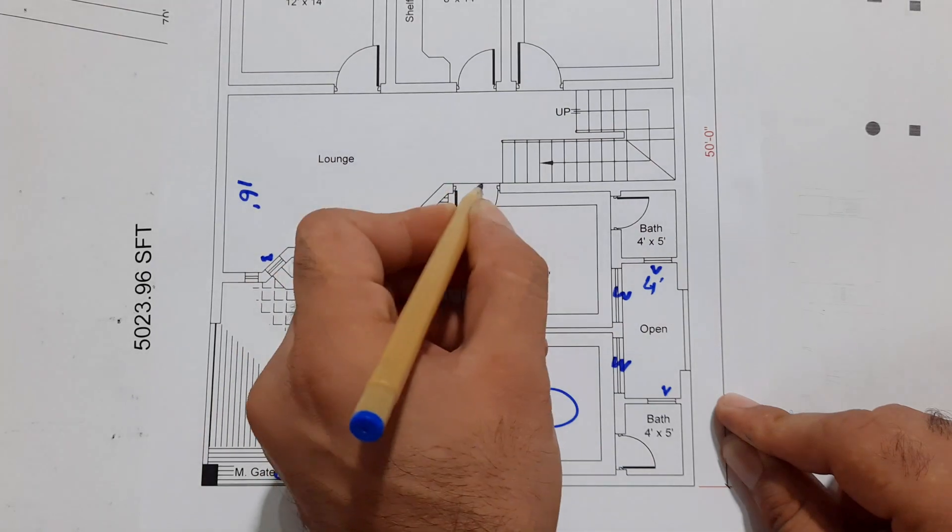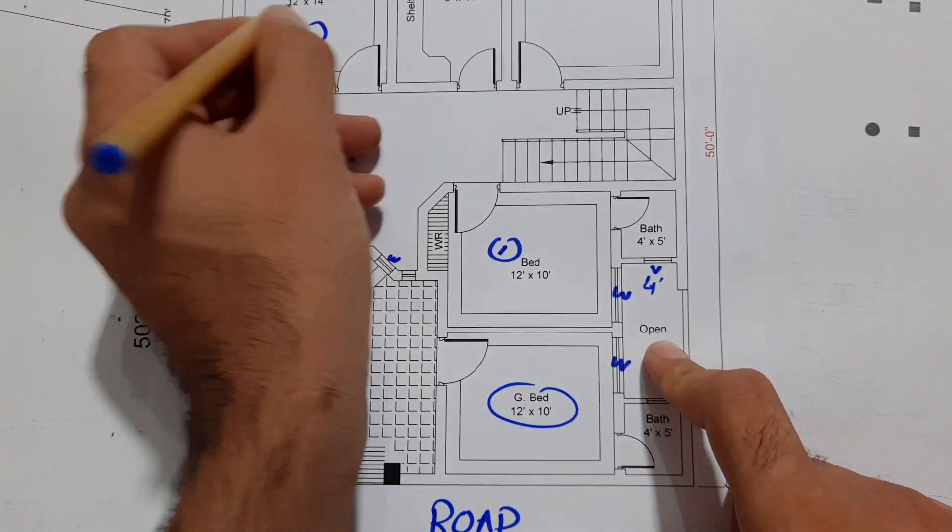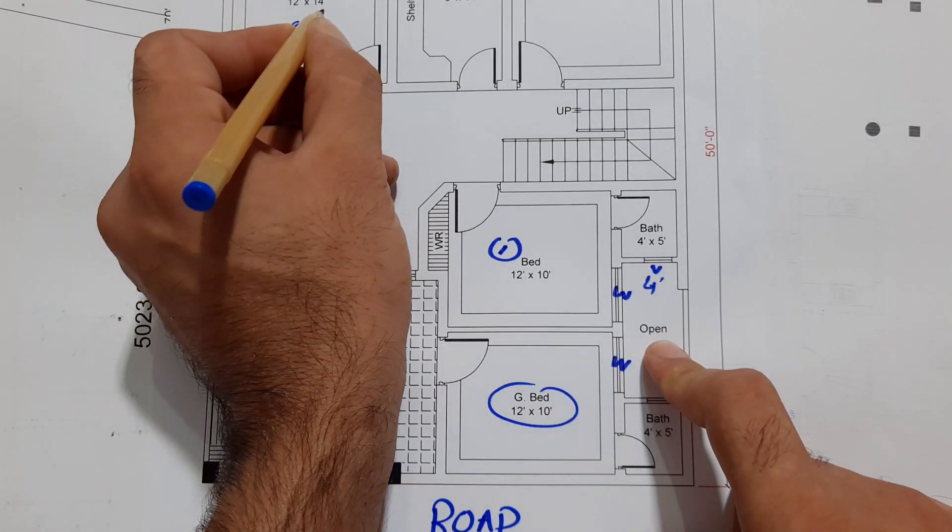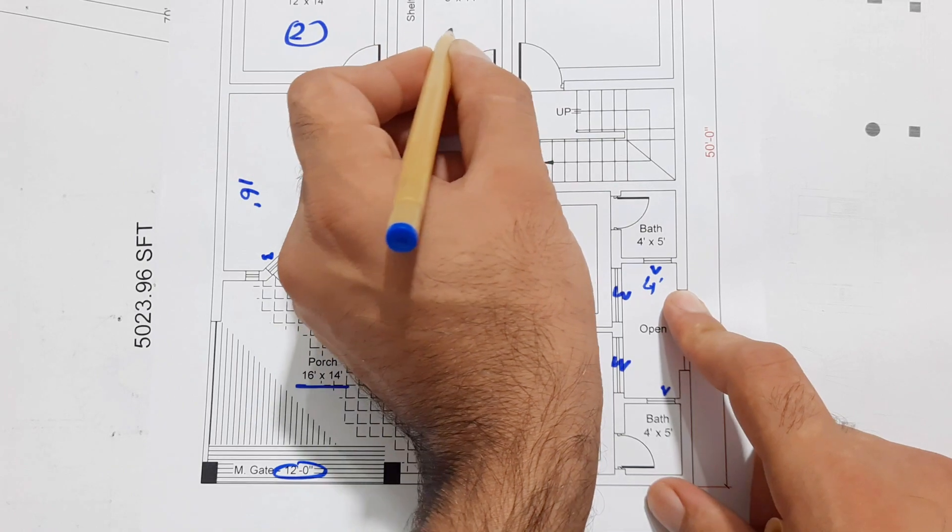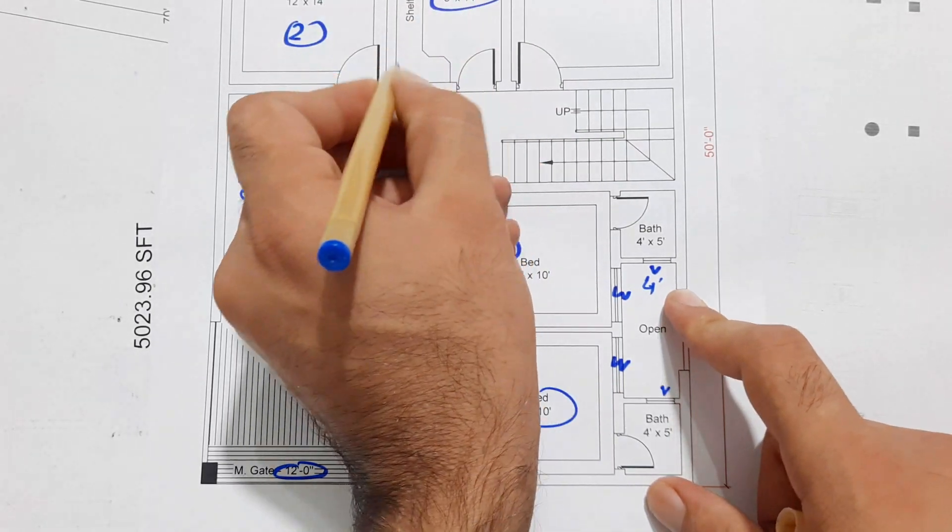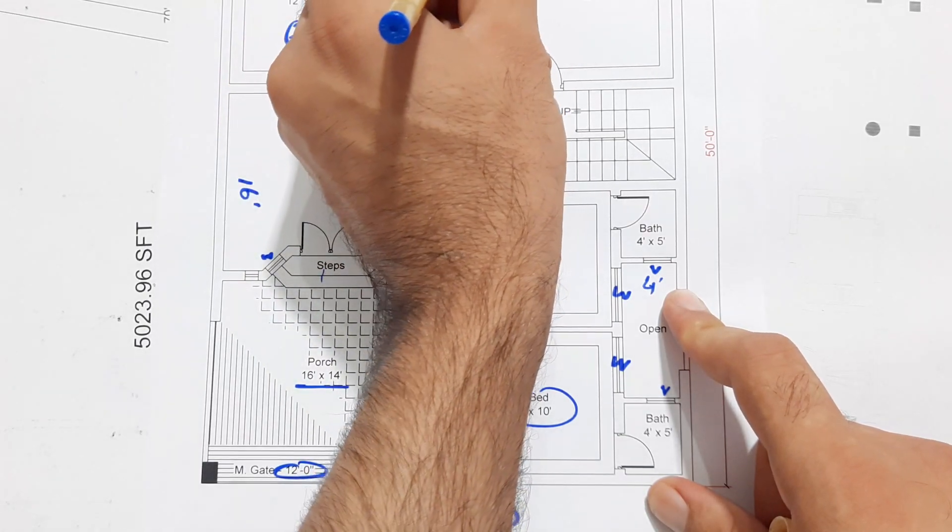Next, you can see we have the second bed which size is 12 by 14 feet. Next you can see this is the kitchen - size of the kitchen is 8 by 14 feet. This is the window to this open sky, this is the door also.